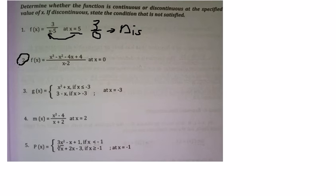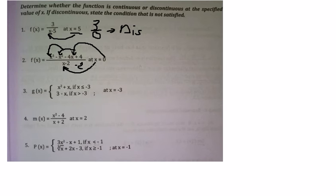Question number two: if we put s equal to zero in here, you get about negative number two on the numerator. If we put number zero in here, you will get about number four. Four divided by negative two gives about negative two, so we can say that's continuous.